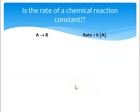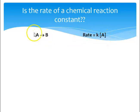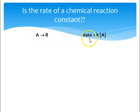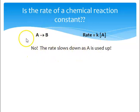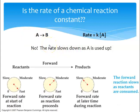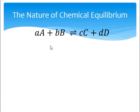Is the rate of a chemical reaction constant? Let's say I have a simple decomposition reaction: A making B. Rate law: rate equals rate constant times the concentration of A. So as A makes B, what happens to the concentration of A? It gets less and less. If this gets less, what happens to the rate? It gets smaller — it gets slower. So reactions always start off fast and then slow down. They're always at their very fastest right at the start.